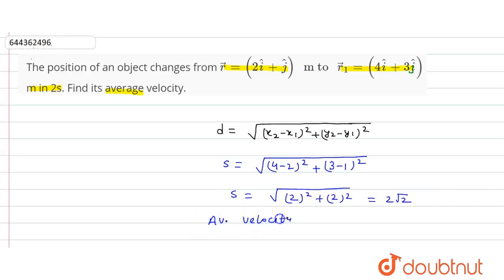v equals, we know displacement upon time, s upon t. So s is how much? 2 root 2 upon time is given 2 seconds. So this will be how much? Under root 2 meter per second.